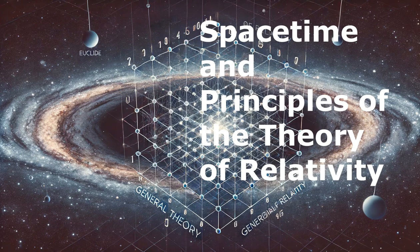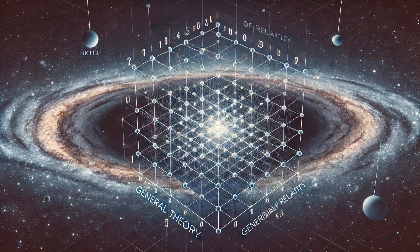Spacetime and Principles of the Theory of Relativity. In the general theory of relativity, events are represented as points in a four-dimensional manifold in the context of spacetime.